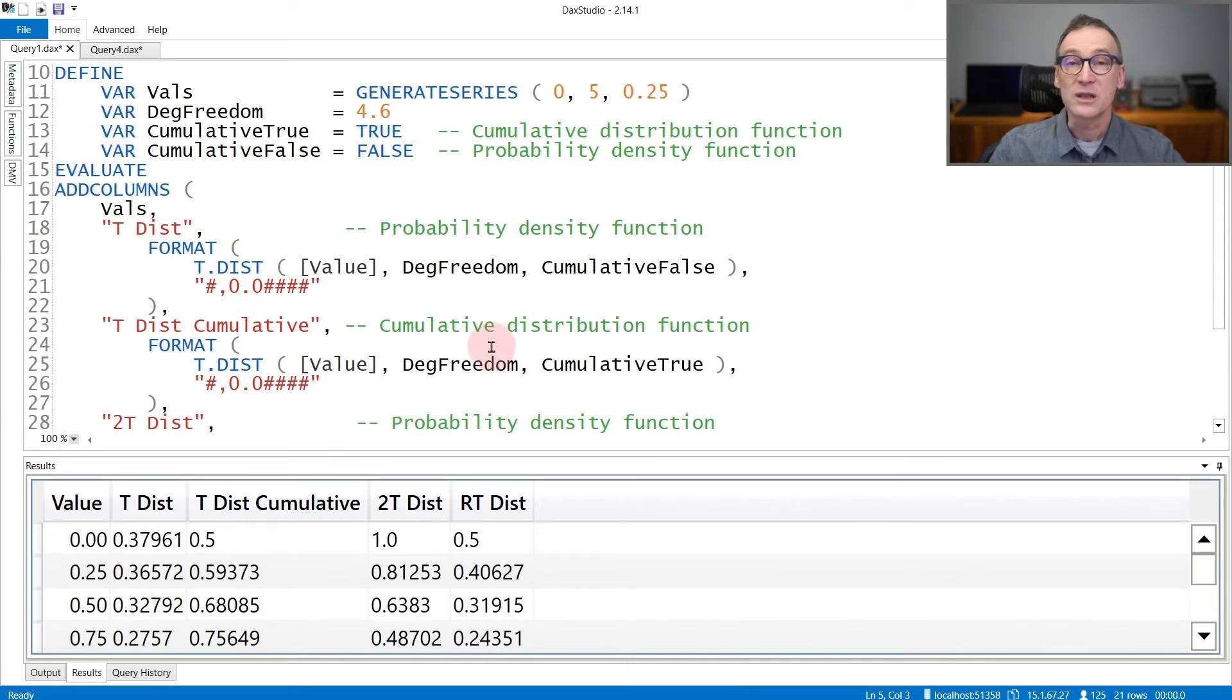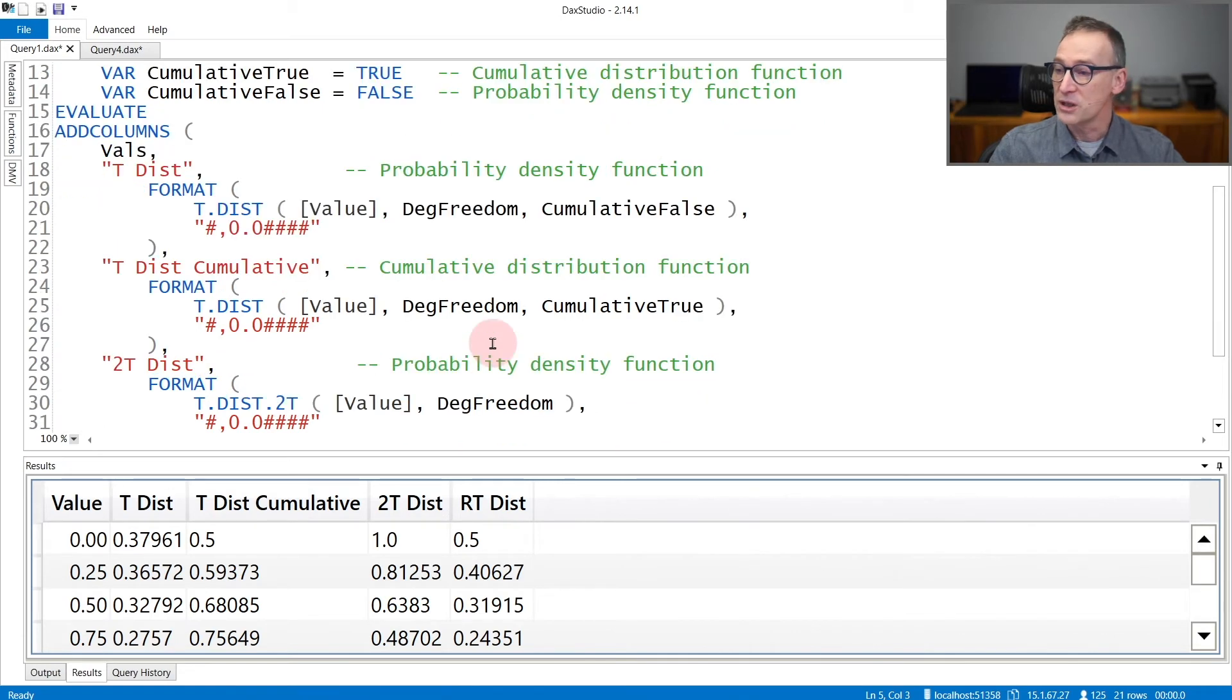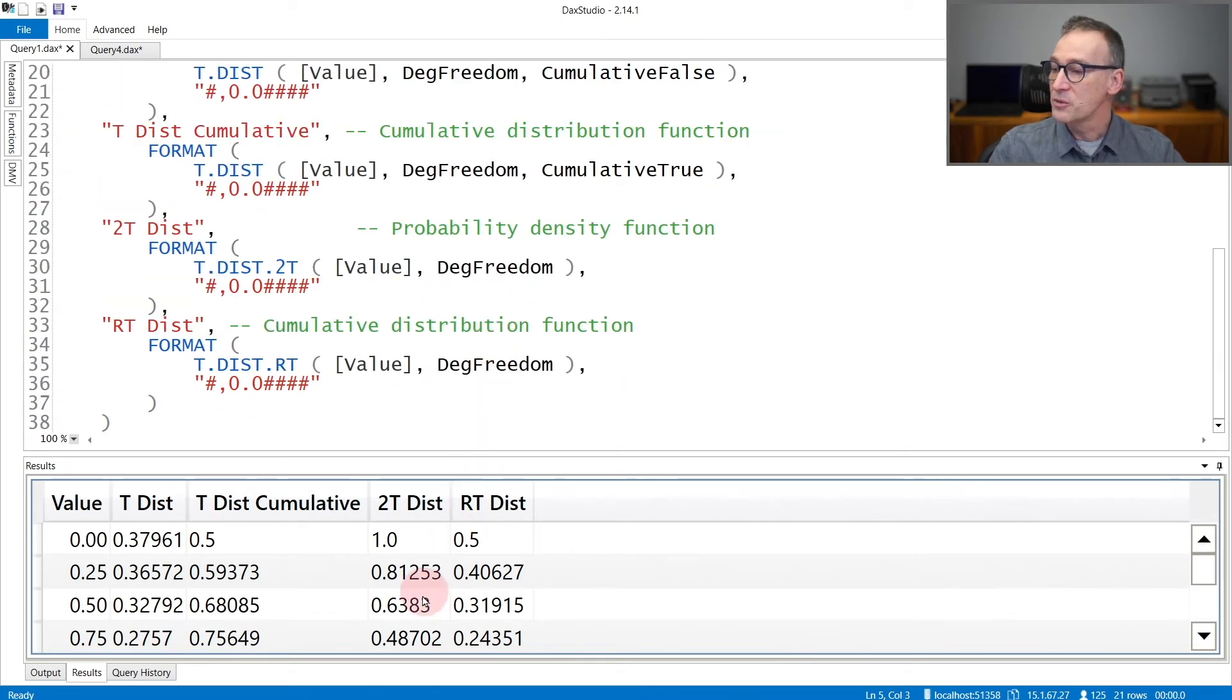I also compute the cumulative distribution function, so the same point but using the cumulative distribution. And I also provide in the same example the two-tailed and the right-tailed results.